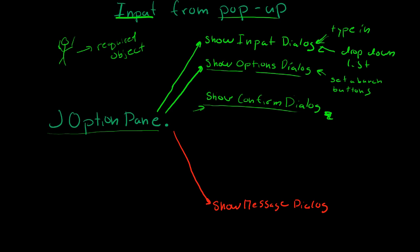JOptionPane does not require an object. Basically, all you have to do is... JOptionPane is just a bunch of what's called static functions, and I'll talk about those later.